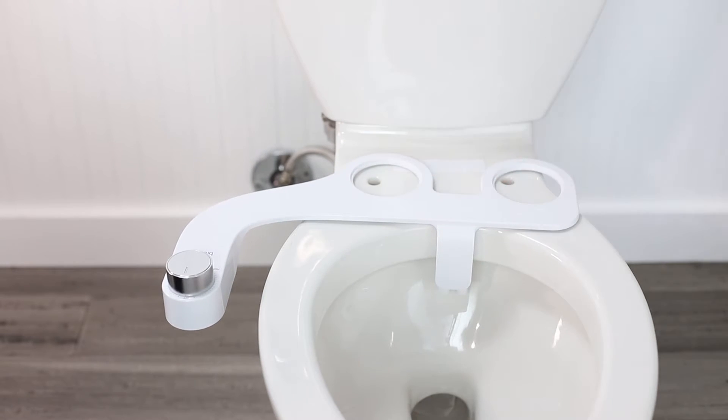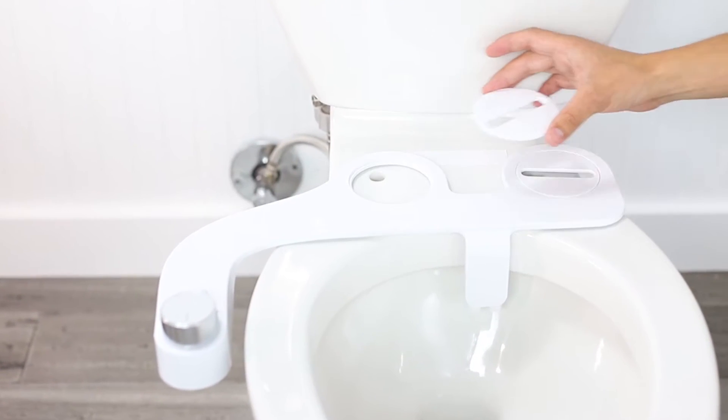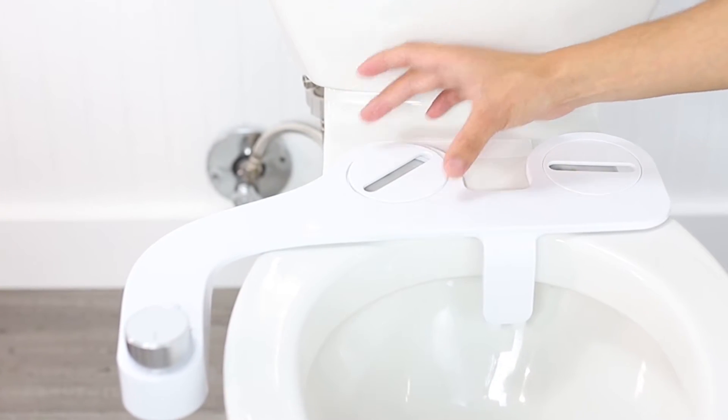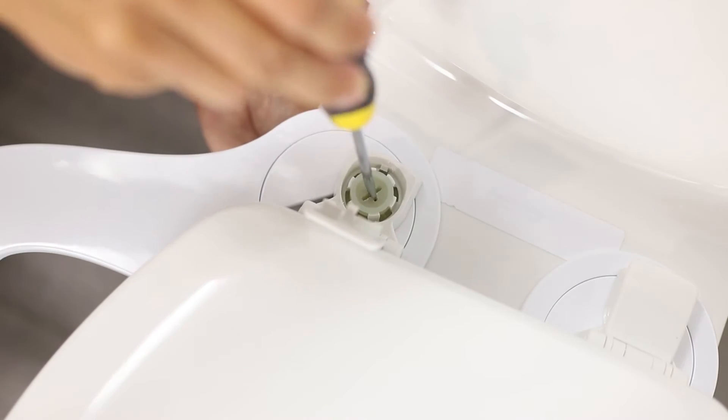Place the bidet attachment centered on the toilet and insert the circular mounting brackets. Place the toilet seat back on your toilet. Adjust your bidet attachment and tighten your toilet seat in place.